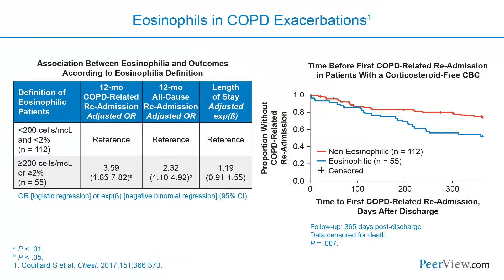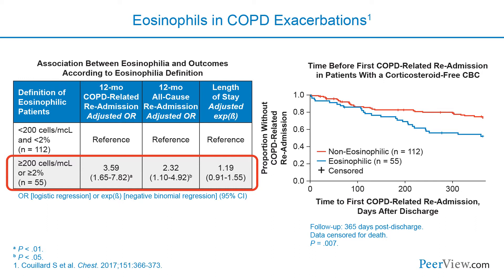Other biomarkers associated with eosinophilic airway inflammation include fractional exhaled nitric oxide, or Th2 activation markers such as serum periostin, which is still investigational. In one study of 167 patients who experienced a severe COPD exacerbation, 55 had eosinophilia — defined as at least 200 cells per microliter and/or at least 2% of the white blood cell count — which was associated with increased risk of 12-month COPD-related readmission, increased risk of all-cause readmission, and shorter time to first COPD-related readmission. Therefore, blood eosinophil levels can be used as a biomarker in severe COPD exacerbations for predicting higher readmission rates.